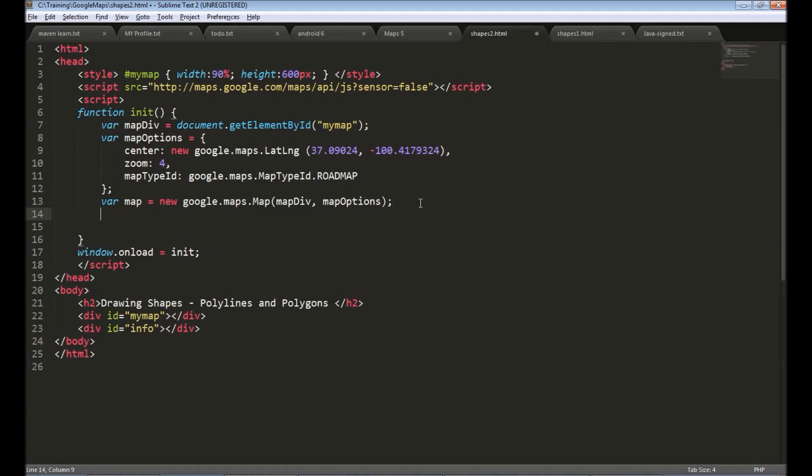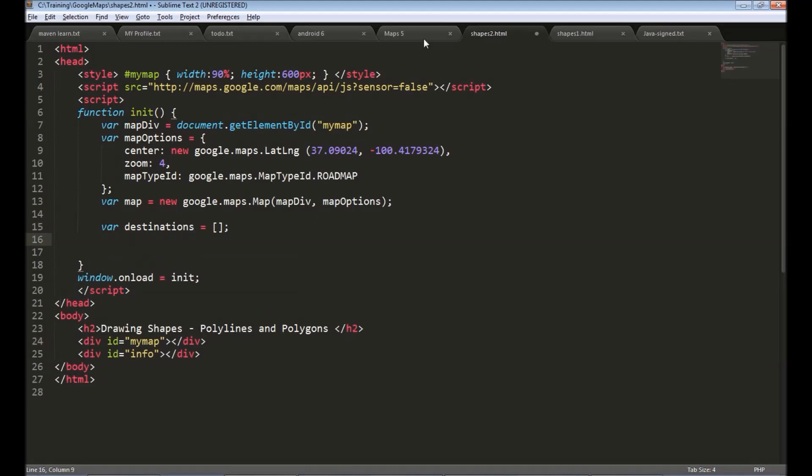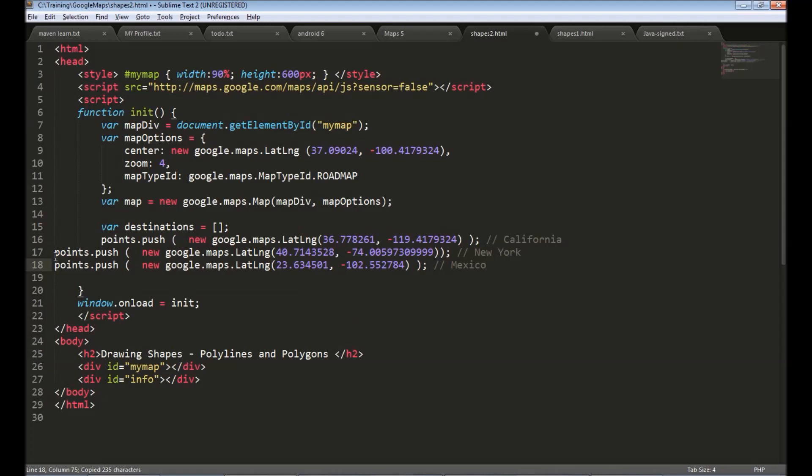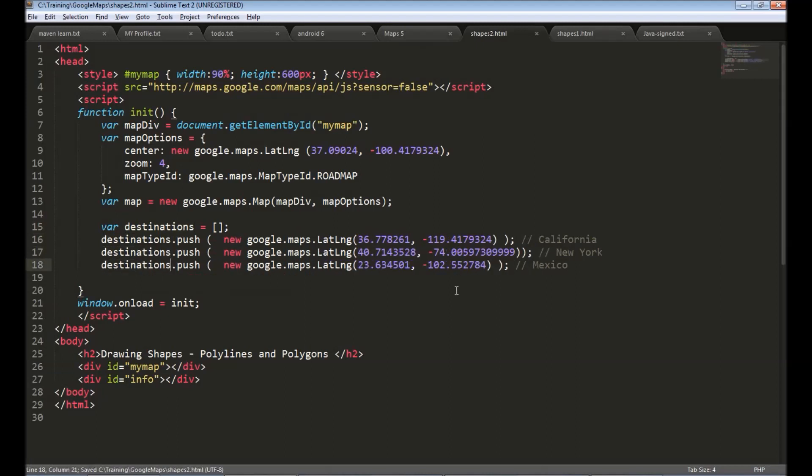The first step is to create an array. Let's say destinations equals to array. I have an array already declared. I just copy that. I have three entries in this array. I call the array destinations. The first coordinate is the California. The second coordinate is the New York. And the third is the Mexico.